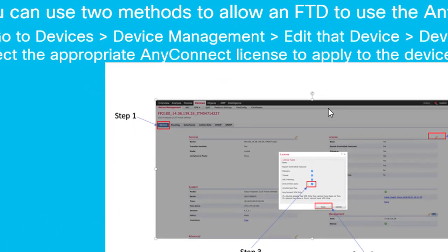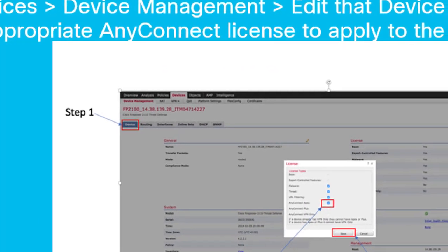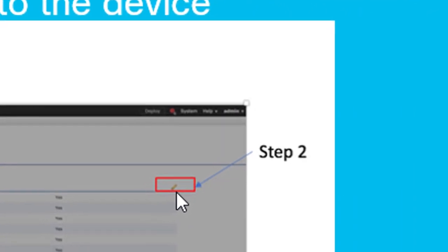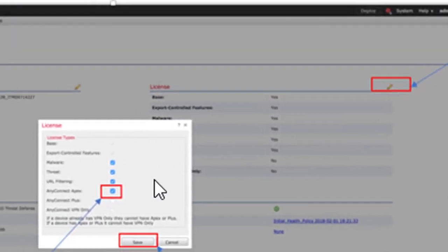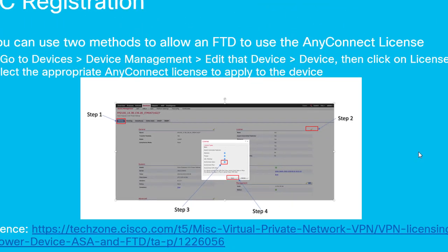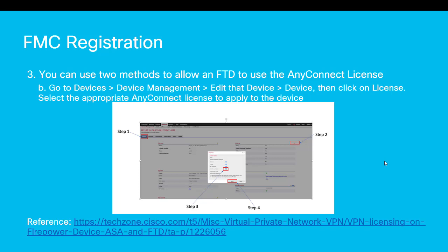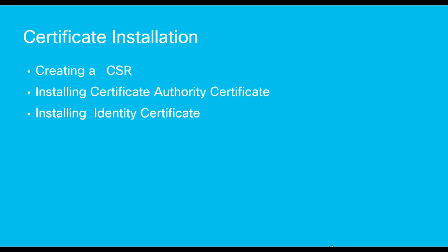Additionally, you can go to Devices, Device Management, and click to edit that device. Click on Licenses in the top right, select the appropriate license, and click OK. The final step in the registration will be to deploy the changes to the FTD device and then verify that everything registered and associated the licenses correctly before you begin to install AnyConnect. Now that we've successfully registered the FTD device and associated the AnyConnect licenses, we'll need to do a few additional configurations in preparation for using the wizard to configure AnyConnect.